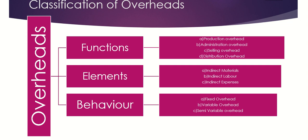Moving on to the second, which is administration overheads. Administration overhead consists of all expenses incurred in connection with the direction, control, and administrative activities of an organization, which are not directly related to production, selling, and distribution functions. Examples include salaries of general management, salaries of office staff, audit fees, legal charges, stationery and printing, office rent, and postage and telephone.